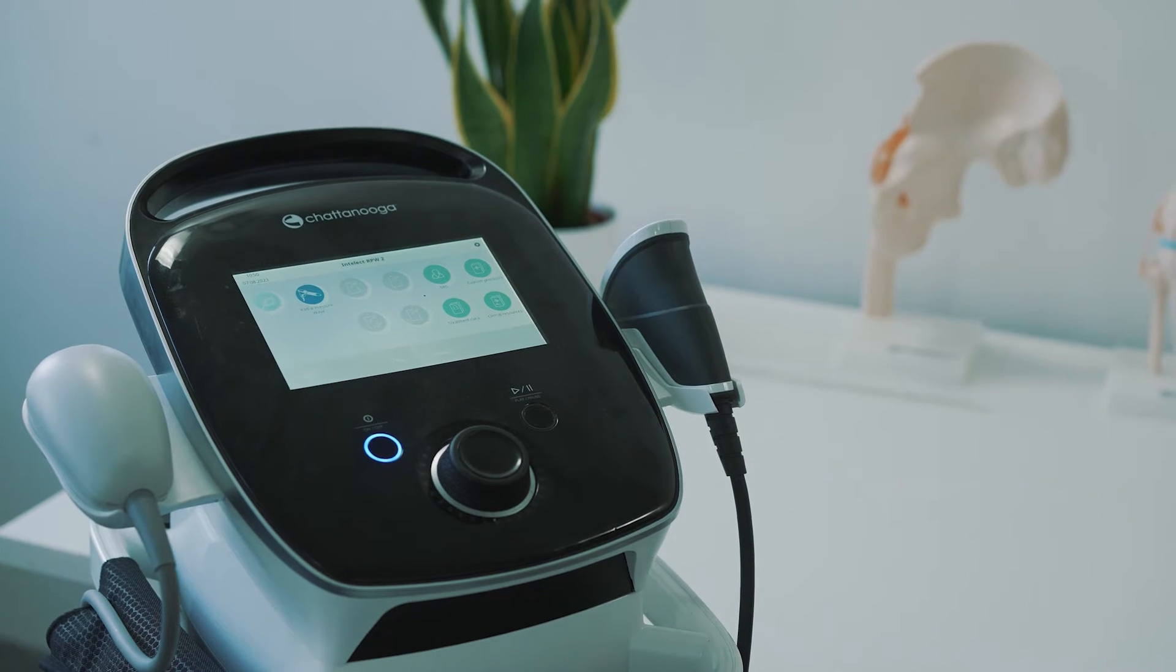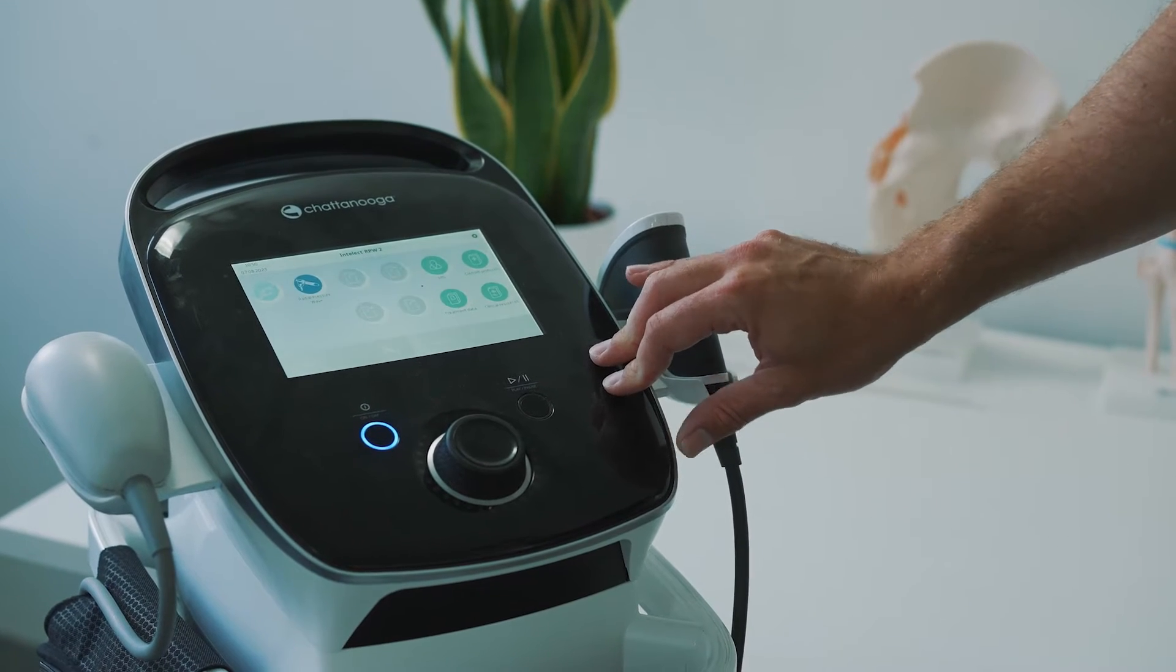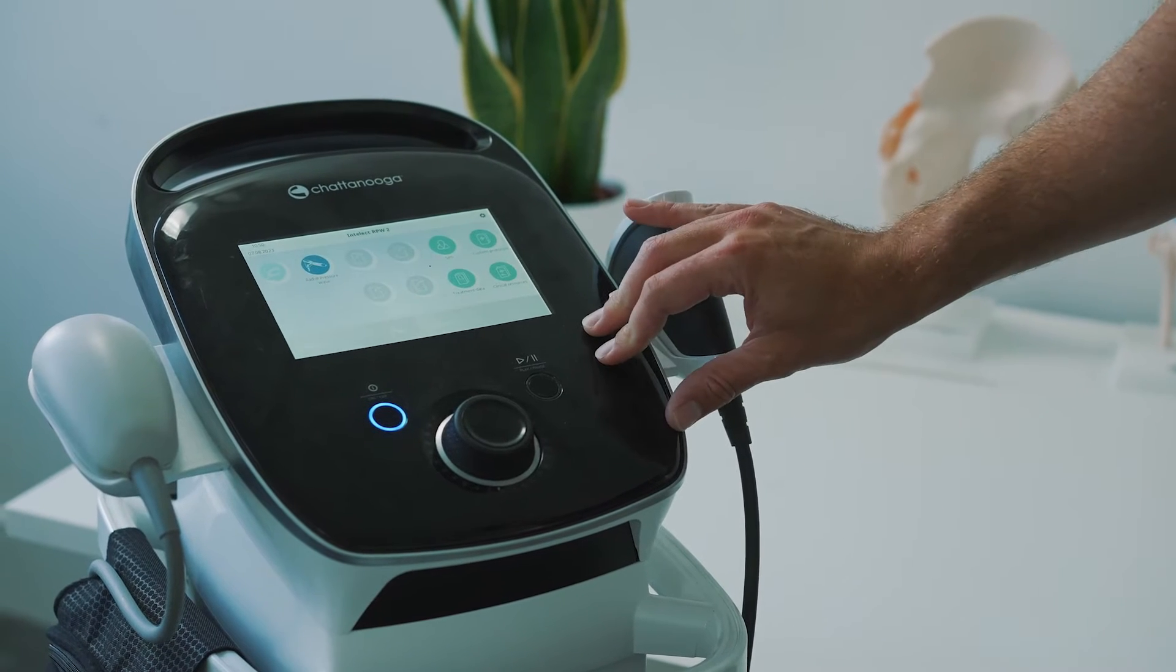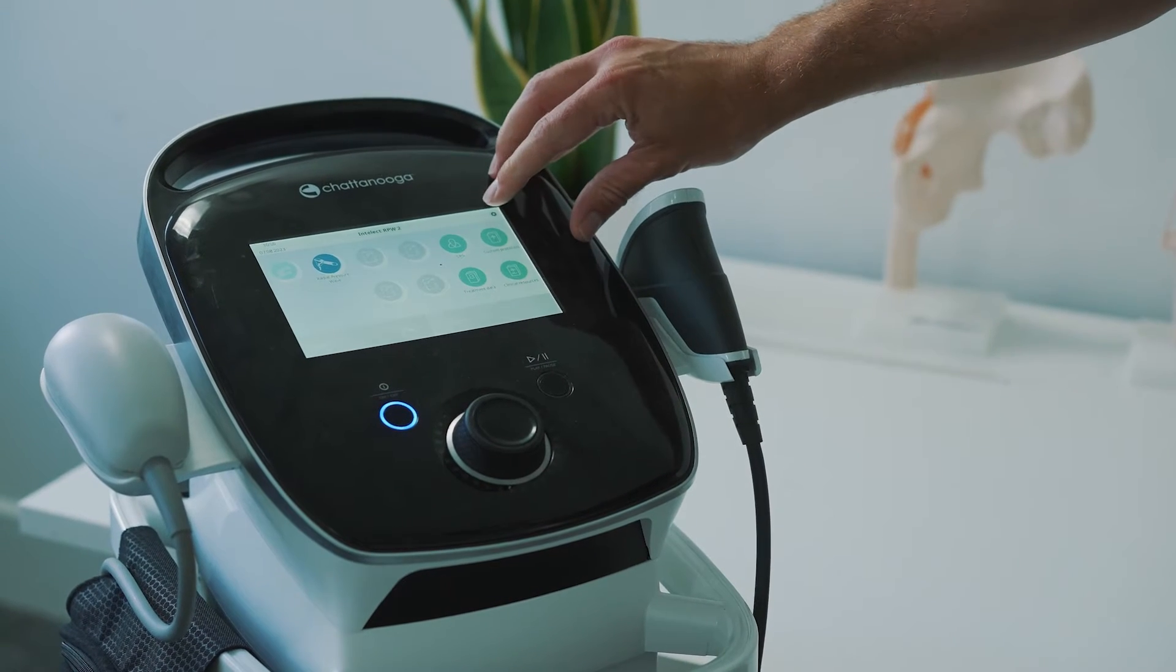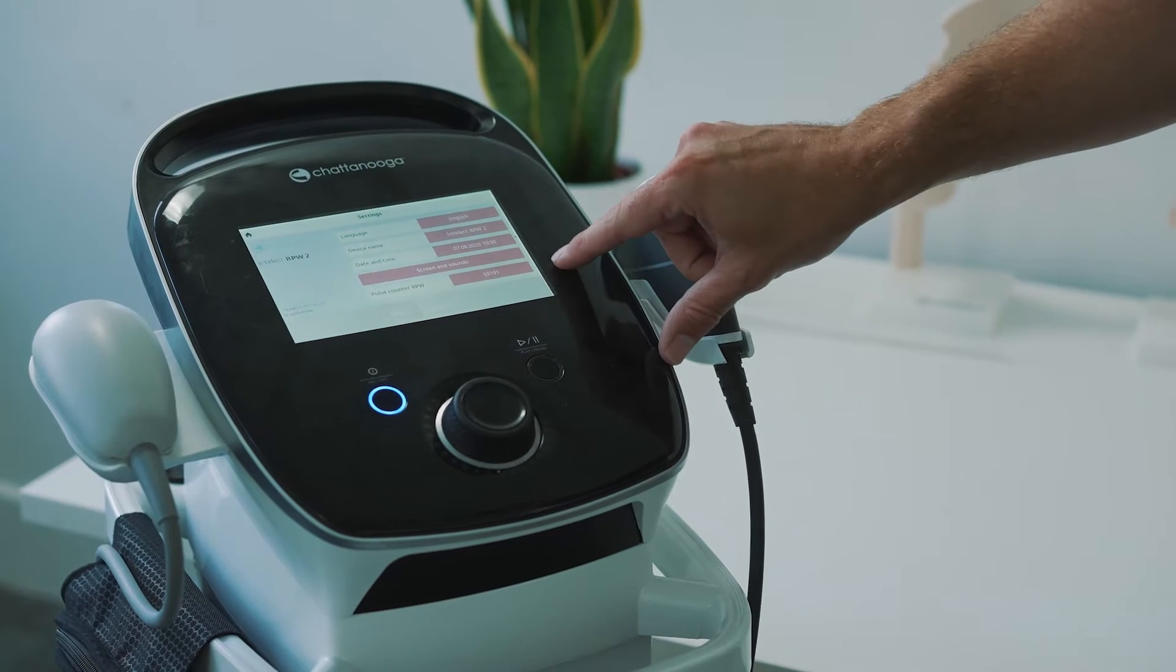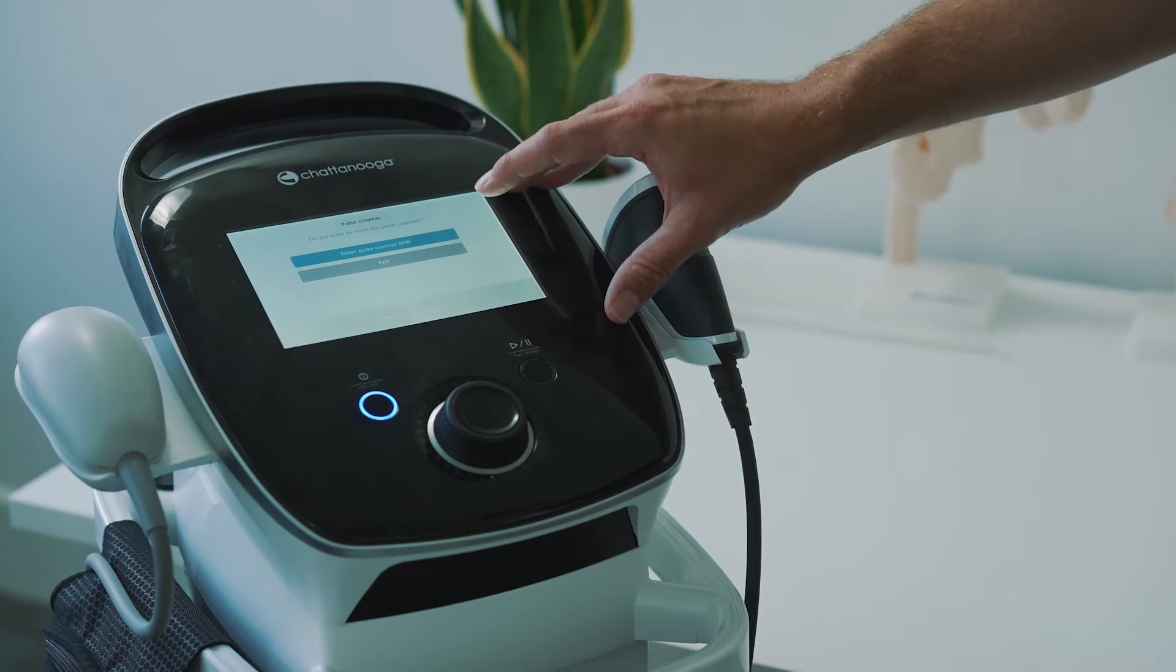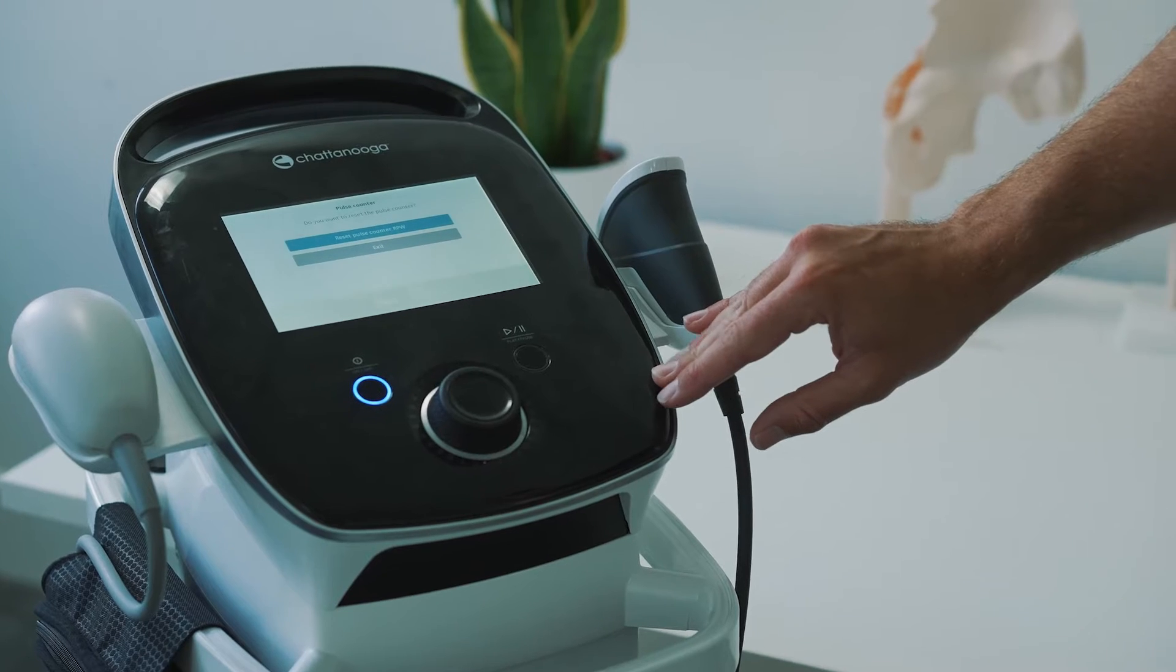It also has clinical protocols for a wide range of indications. Your Intellect RPW2 will tell you when it hits 1 million pulses and it's ready for a revision, but if you want to check the pulse counter yourself, click the cog in the top right hand corner. The pulse counter is displayed at the bottom of the screen. You can select here and once you've completed your revision you can reset the pulse counter.